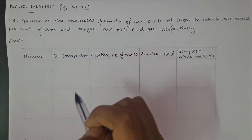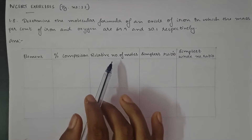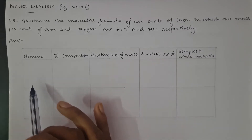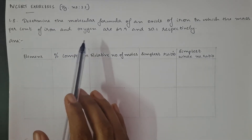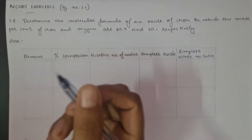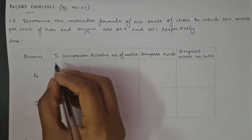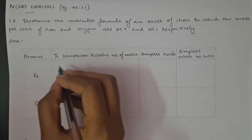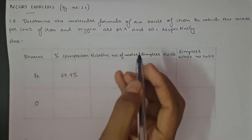To find the answer for this question, we have to make a table with different headings named as: element, percentage composition, relative number of moles, simplest ratio, and finally simplest whole number ratio. Below the element heading, we write the different elements given in this question, which are iron (Fe) and oxygen (O). The next column represents the percentage composition of these elements.